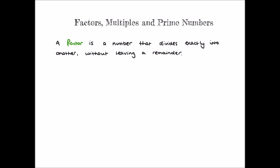We say that a factor is a number that divides exactly into another without leaving a remainder. And we can list factors of a number in pairs. Take, for example, the factor pairs of 20. We know that 1 times 20 is 20. Similarly, 2 times 10 is 20, and 4 times 5 is 20. So all the factors of 20 are 1, 20, 2, 10, 4, and 5.